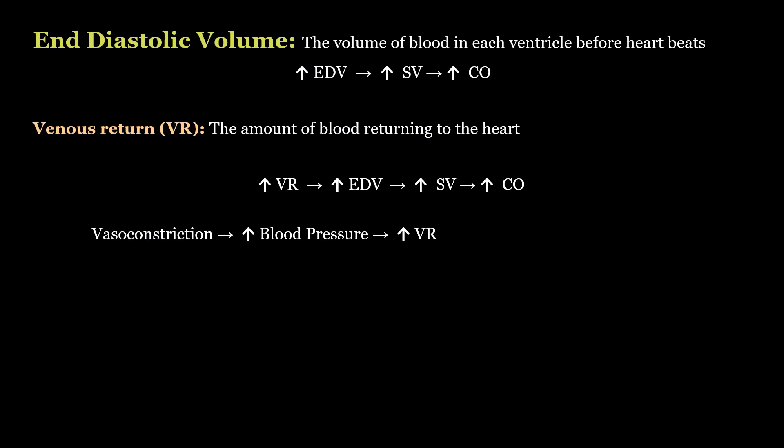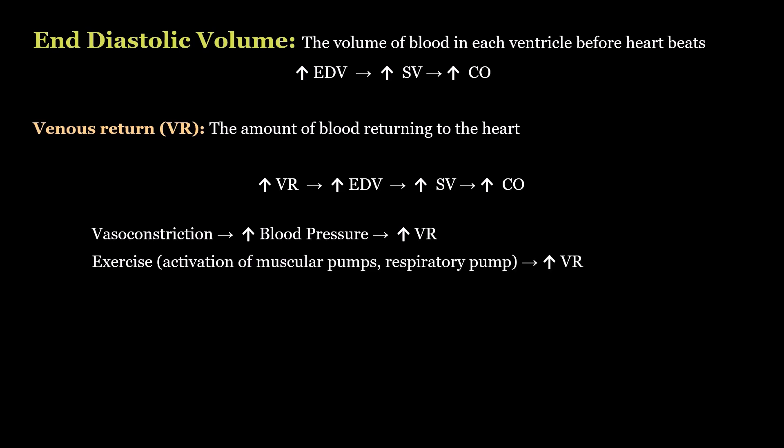When you're exercising, your venous return increases because your muscles squeeze on your veins and push the blood back to your heart — that's your muscular pump. Your respiratory pump is your breathing in and out; that in-and-out motion pumps the blood vessels in your thorax and pushes everything to your heart.